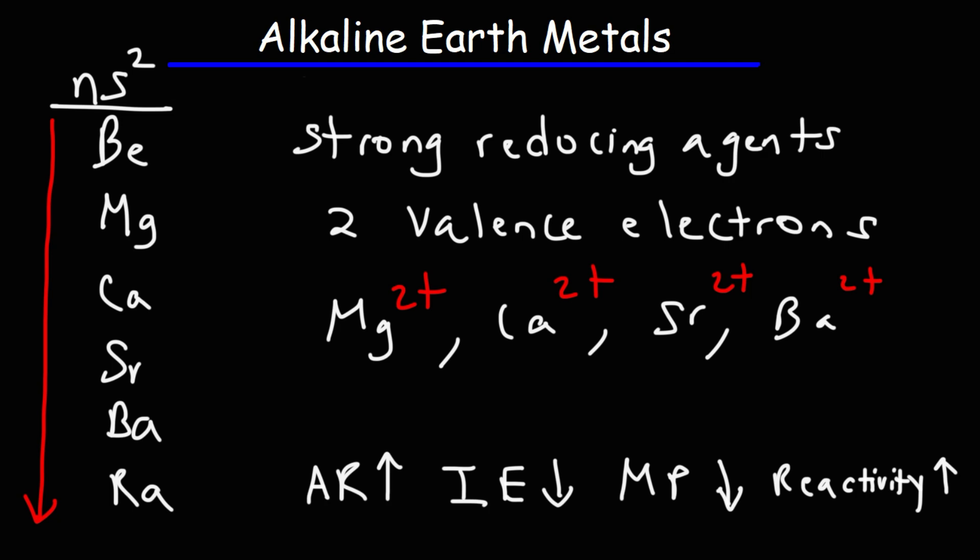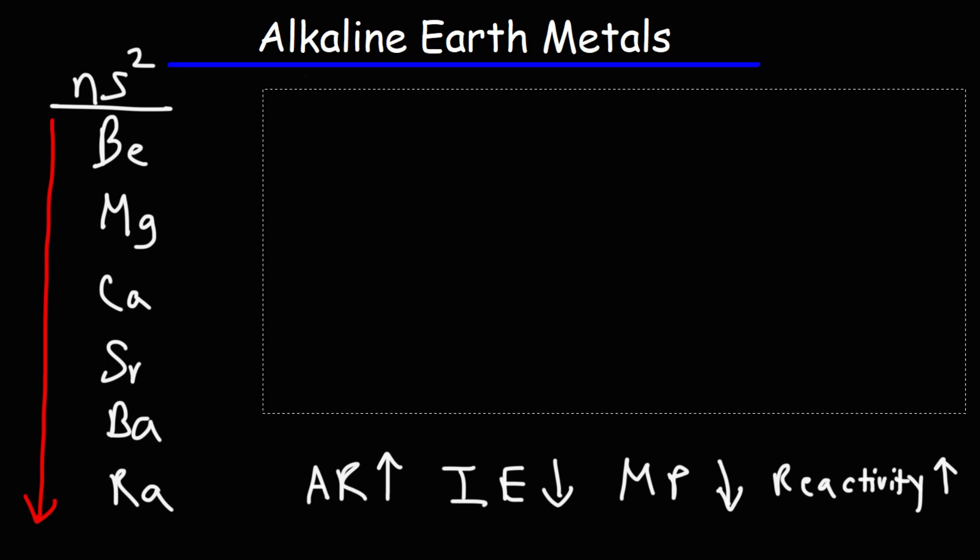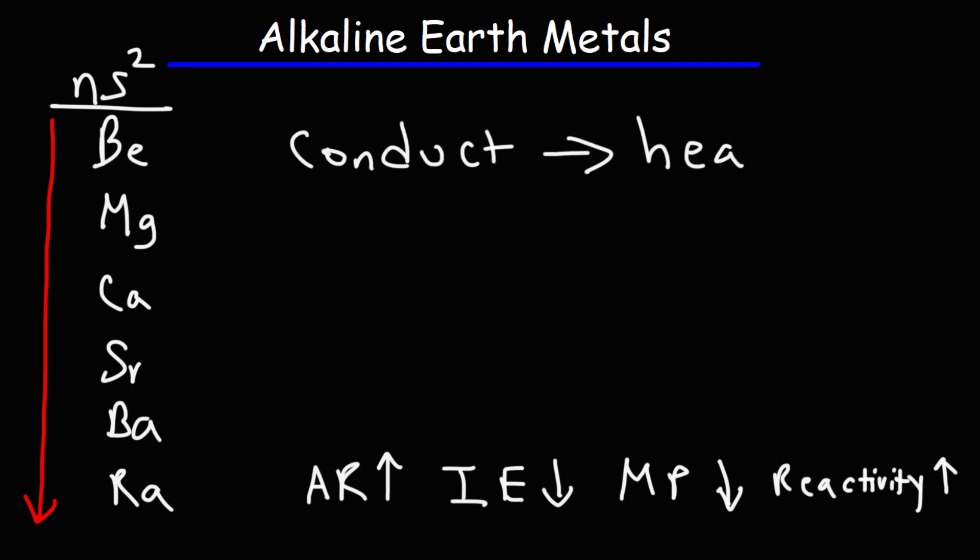Now like other metals, alkaline earth metals conduct heat and electricity. They're malleable, they can be hammered into sheets. They're ductile, they can be pulled into wires, which is very typical of other metals.